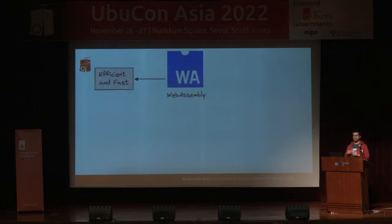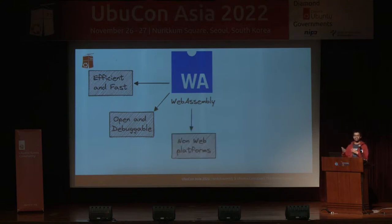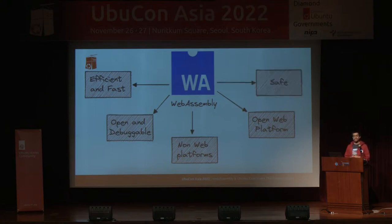Some of WebAssembly's key features: first, it's really efficient and fast — it primarily works at near-native speeds since it's a bytecode that interacts directly with your system resources. It's open source and very easy to debug. It works for non-web platforms as well — we'll be exploring more on the container side and non-browser applications. And it still has an open web platform since it started as a web technology. If you're aware of JavaScript, there's something known as ASM.js, or assembly.js — that's the origin of WebAssembly as a technology.